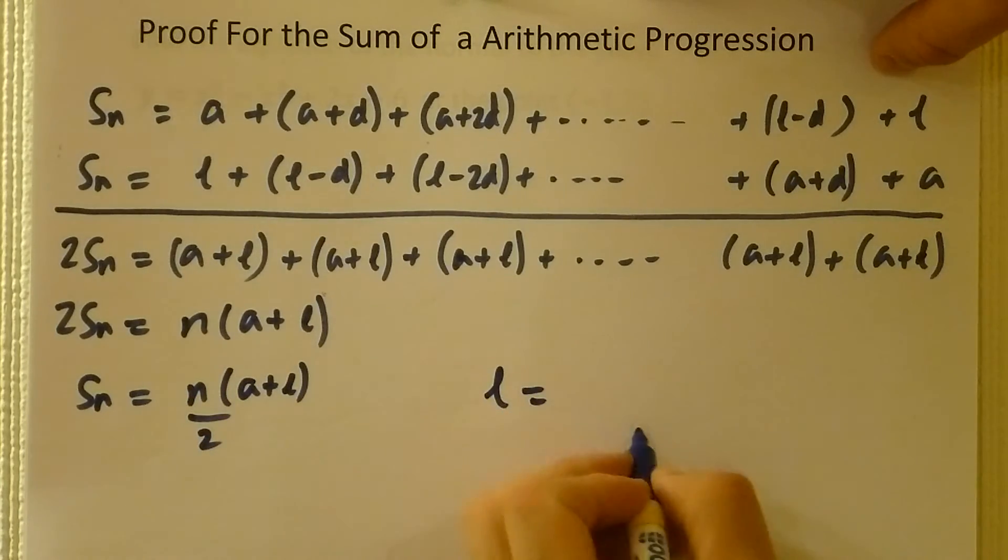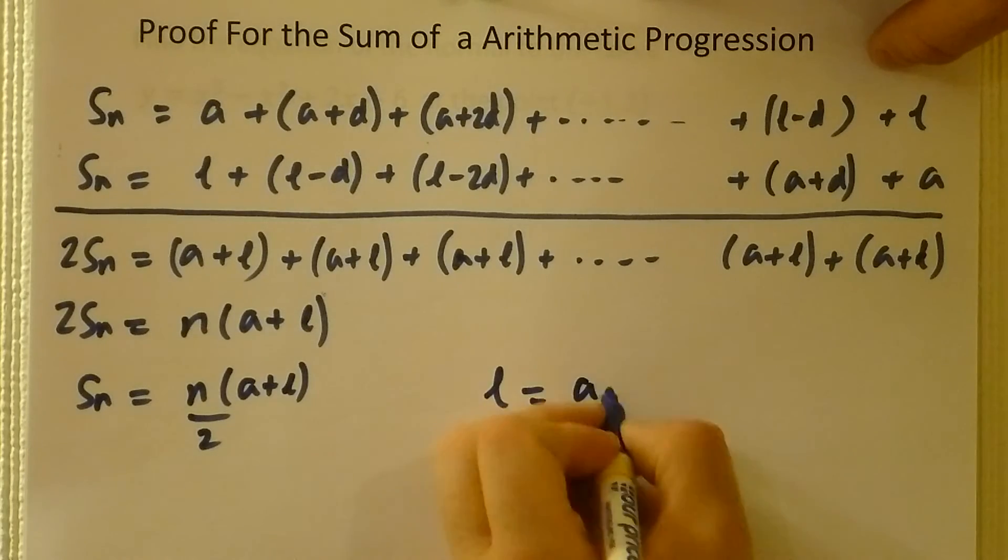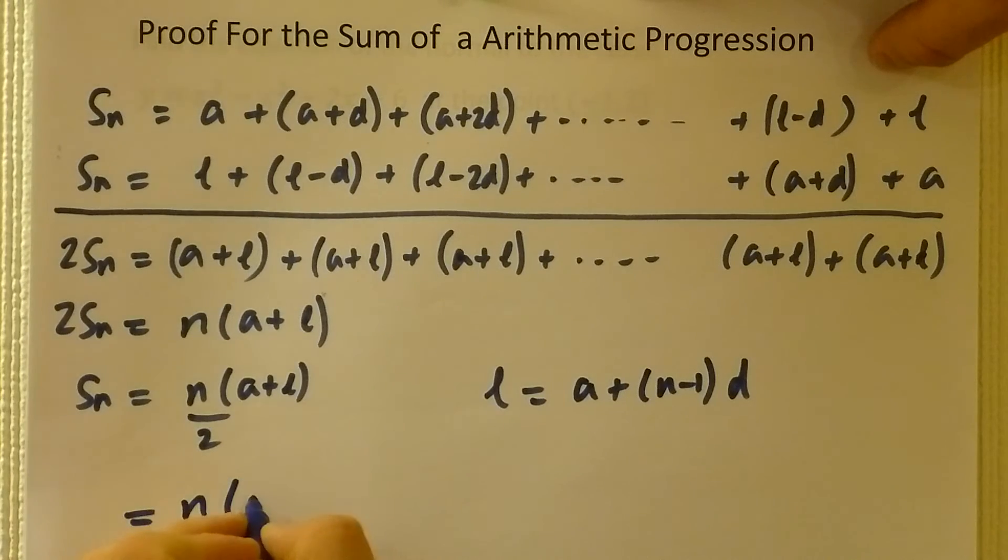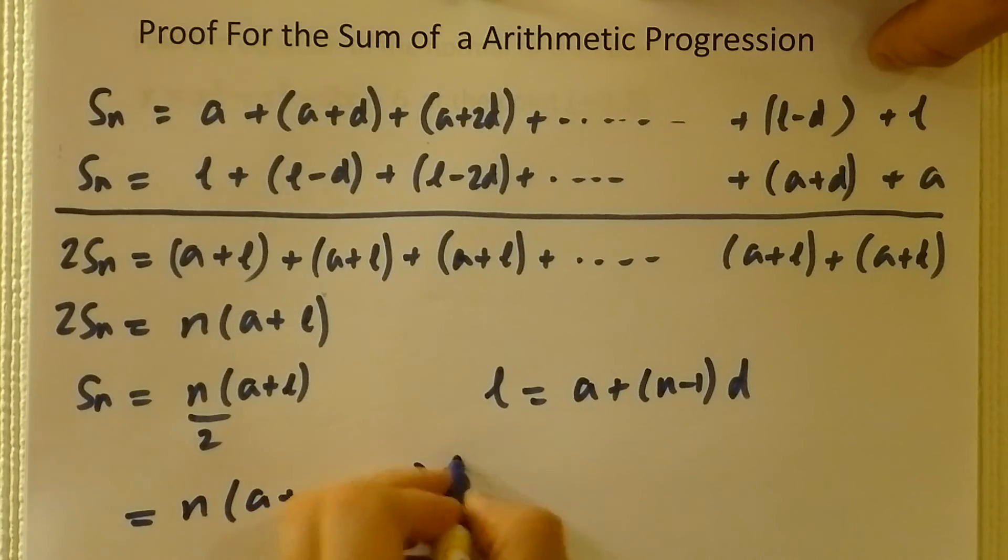Now, the last term, also known as the nth term, is a plus n minus 1 lots of d. So if I replace that in here, l with a plus n minus 1 lots of d.